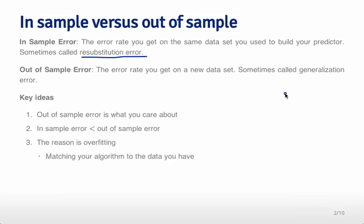The reason why is in your specific sample, sometimes your prediction algorithm will tune itself a little bit to the noise that you collected in that particular data set. And so when you get a new data set, there'll be different noise, and so the accuracy will go down a little bit.